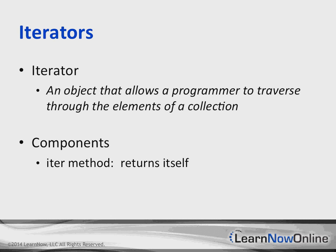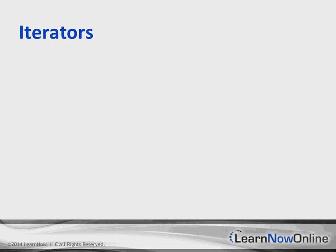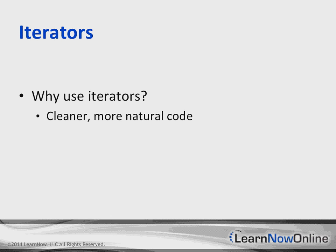The two main things you're going to want to call are the iter method, which by default returns itself, and then the next method, which lets you traverse down the collection one at a time. I'll also show how you can print out the entire collection at once and store it inside an iterator variable. There are a number of different reasons why you want to use iterators — one is it's a very clean, elegant way to traverse through a collection.